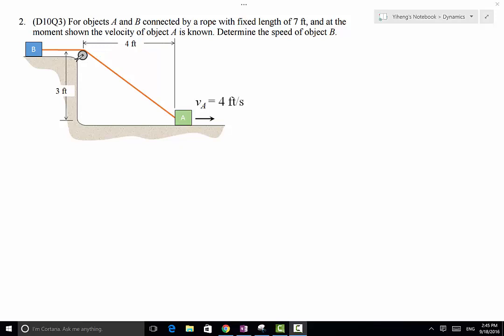This is again a problem of dependent motion. We have two objects A and B, they are connected by a rope with a fixed length of 7 feet, and at the moment shown the velocity of object A is known, that's 4 feet per second to the right, and we need to determine the speed of object B at this moment.